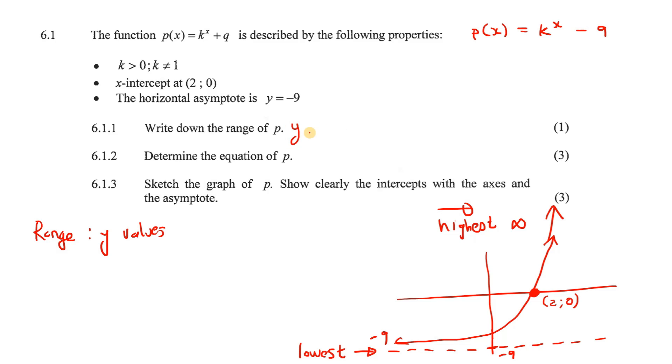So when we write down the range, you could use interval notation, where you would go from minus 9 with a round bracket up to infinity. Why is it a round bracket? Well, it's because this line is a dotted line. It's an asymptote. And the graph doesn't physically touch minus 9. It just gets very close to minus 9. But it doesn't touch the minus 9. It's not the same as a parabola. For those of you that prefer set notation, you could just say that y is bigger than minus 9.